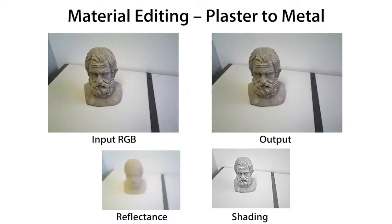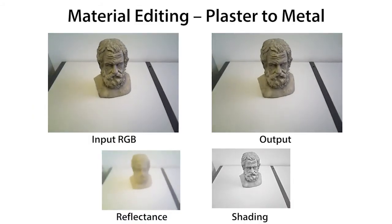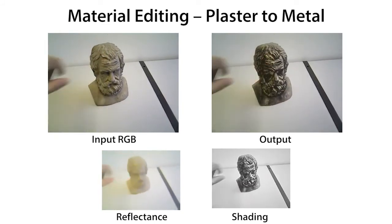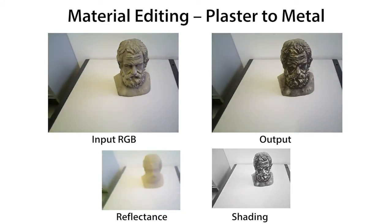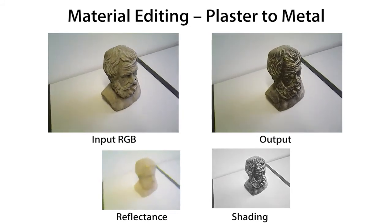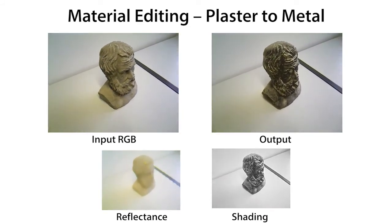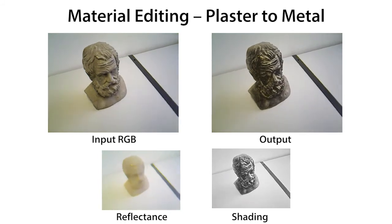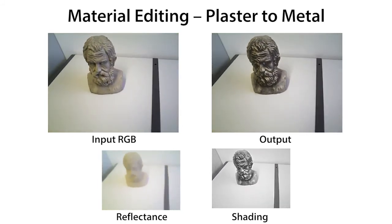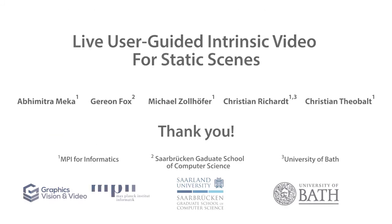We can also modify material properties by modifying the shading layer. With a single touch, we can convert the bust from plaster to metal. The stroke is propagated on the bust automatically. All of these, and many more augmented reality applications, are enabled by our technique.